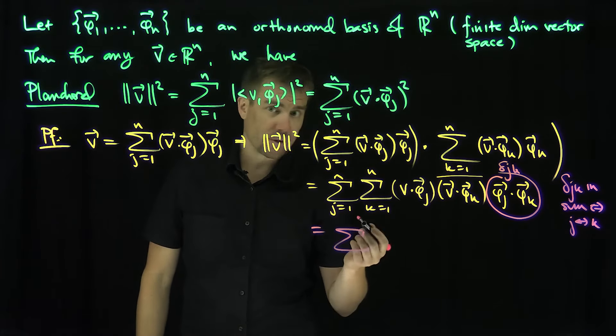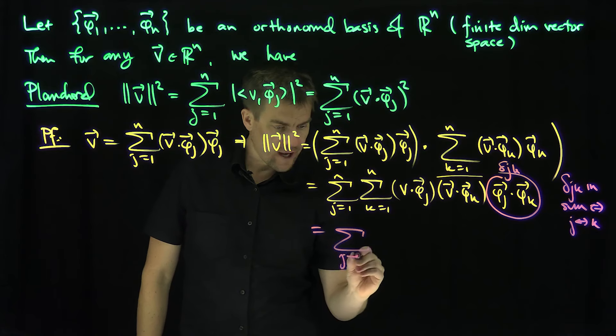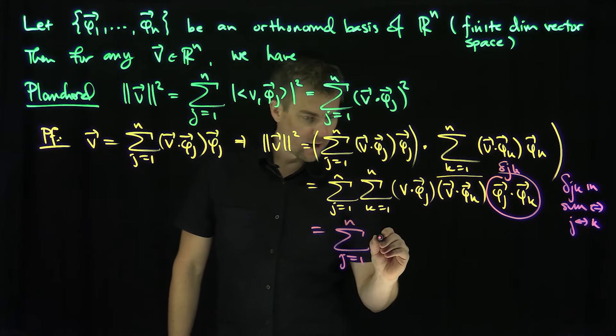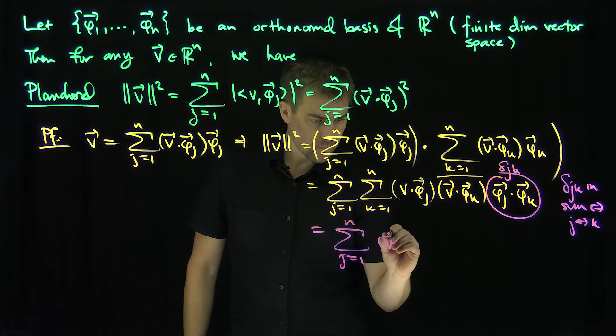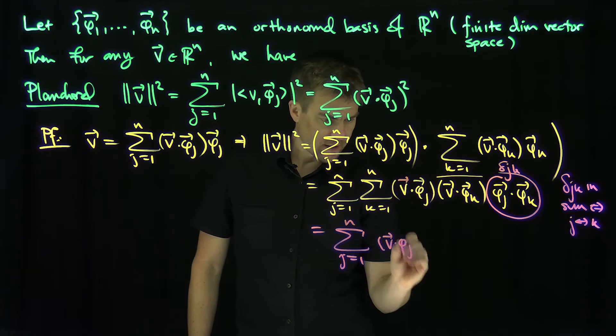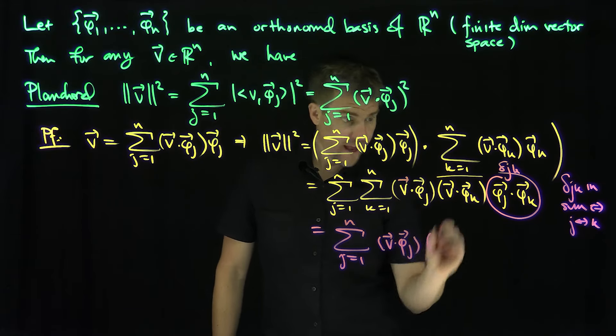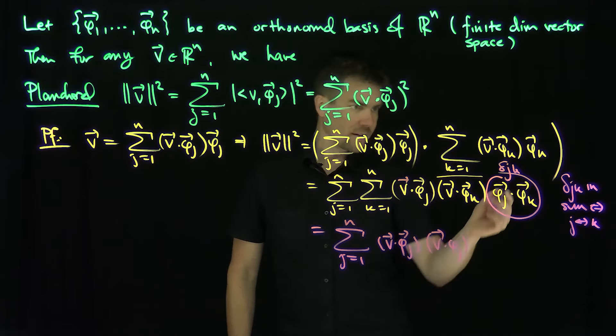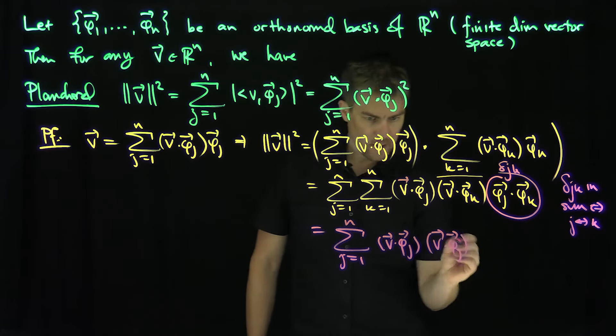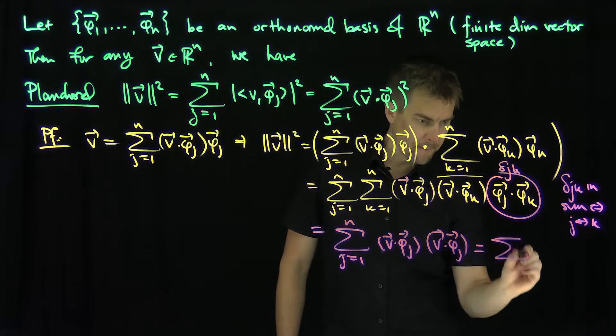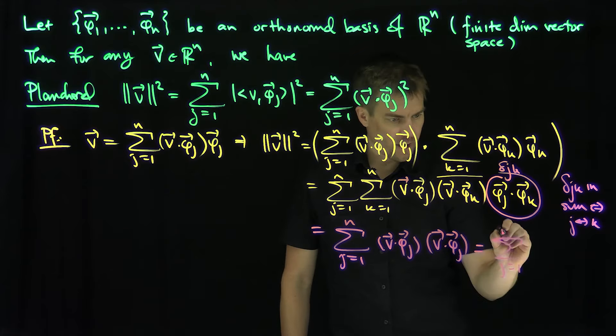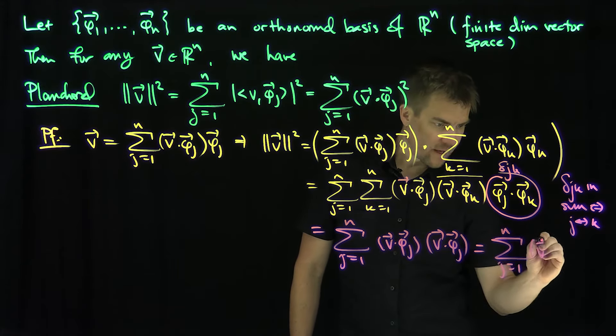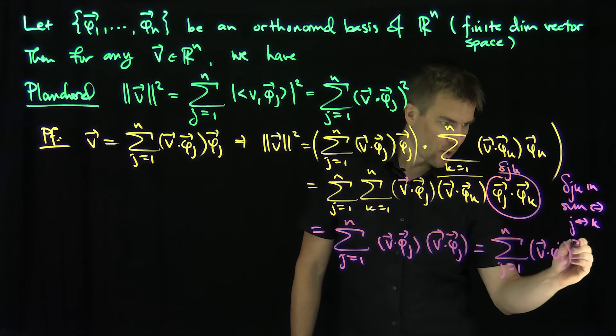So this is going to be exactly what? The sum, I can replace either j or k, it's irrelevant, j goes from 1 up to n of v dot phi_j and another v dot phi_j. And then delta_jj is equal to 1.